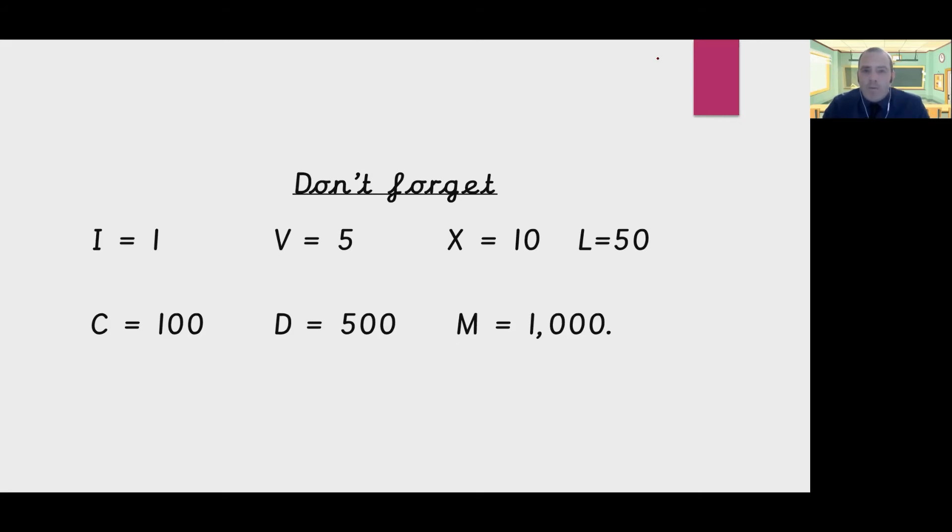Also remember, the Roman numerals don't have four of the same letter following each other. So if you need to be slightly less than something, put the smaller number first, and then the bigger number. So if we were going to write 9, it wouldn't be VIIII, it would be IX for one less than 10.